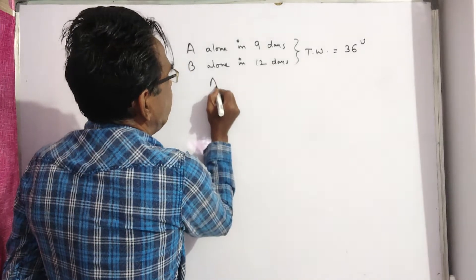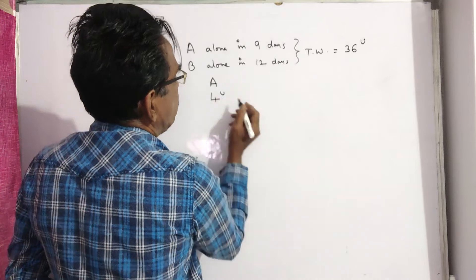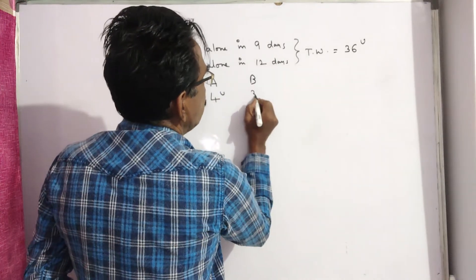A can complete 36 in 9 days, so A can complete four units per day, whereas B can complete three units per day.